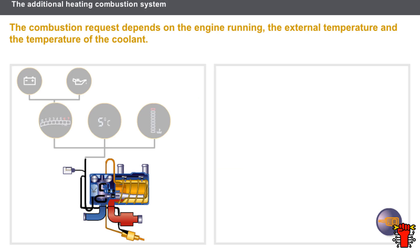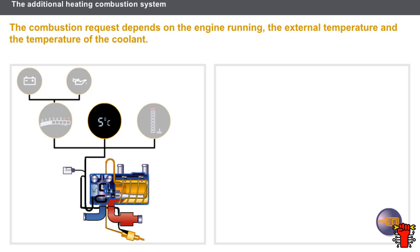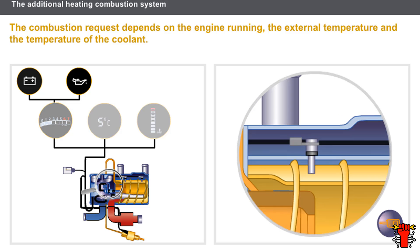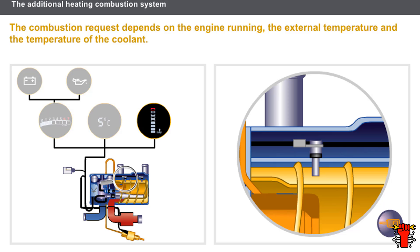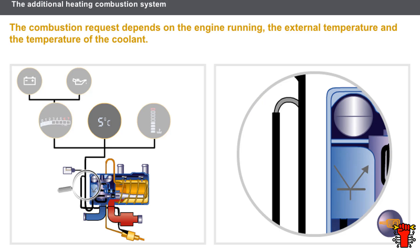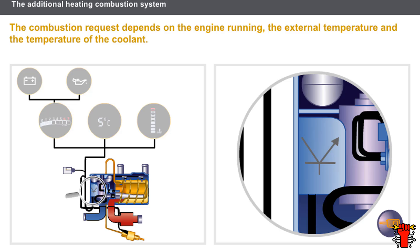The combustion request is automatic and depends on the following conditions: engine running, external air temperature below or equal to 5 degrees Celsius, and coolant temperature below the boiler's emergency threshold. When starting the engine, the oil pressure warning light or battery charge warning light ignition circuit sends the engine running signal to the control device. The coolant temperature sensor informs the control device of the engine temperature on starting. The switch informs the control device when the air temperature is below or equal to 5 degrees Celsius. Using this information, the control device decides whether or not to activate the system.